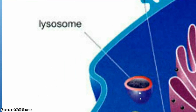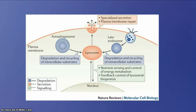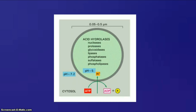Lysosomes are organelles within cells that act as a waste disposal system by degrading cellular debris. Some other functions of lysosomes include specialized secretion, plasma membrane repair, and control of energy metabolism. Lysosomes contain more than 50 enzymes known as acid hydrolases that are all active in the acidic environment of the lysosome. In a normal cell, the acid hydrolases are present and active in the lysosomes. However, in patients with I-cell disease, the acid hydrolases are absent from the lysosomes and are unable to catalyze the breakdown of cellular debris.